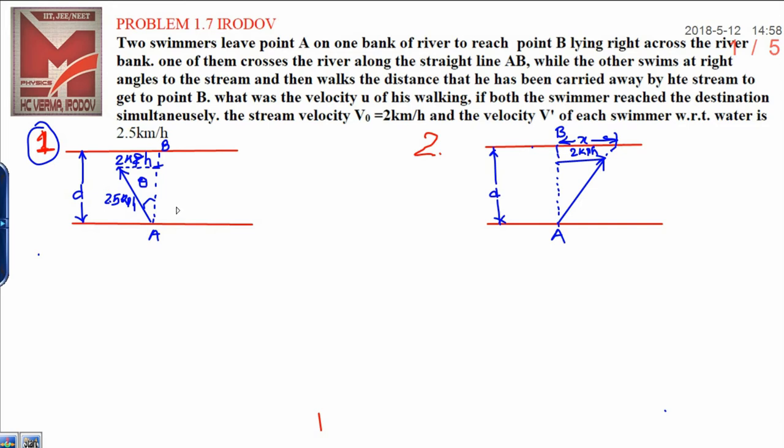The two swimmers leave point A on one bank of the river to reach point B lying right across on the other bank. One of them crosses the river along the straight line AB, while the other swims at right angles to the stream and then walks the distance.